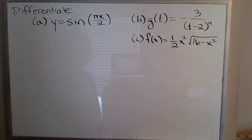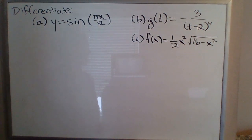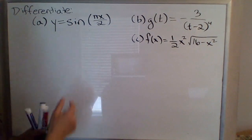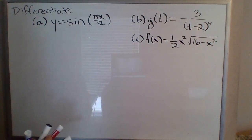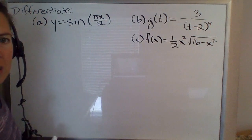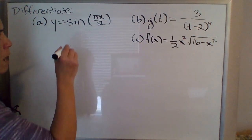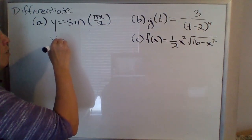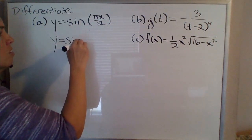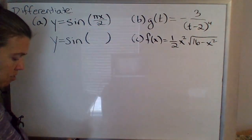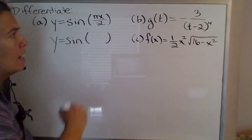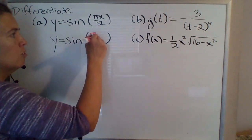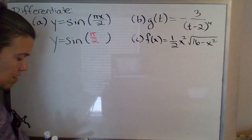So now it's chain rule time. I've got a few introductory examples to help get used to using the chain rule. I'm going to start with sine of πx/2. With each of these, the key is going to be to start with a little bit of rewriting of the original function. In this case, let's look at this as sine of — this πx/2 — you want to read that as a constant coefficient π/2 times x.